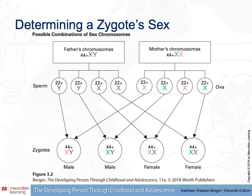When we look at how the sex of a zygote is determined, you can see there's a 50-50 chance that a healthy male and a healthy female will have a male child or a female child. You're always going to get an X from the mother, and you're always going to get either an X or a Y from the father, and that's how those combinations occur.